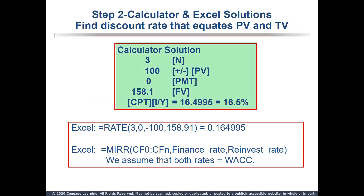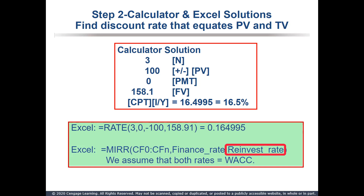Enter the values in the TVM keys: N equals 3, present value is negative 100, payment is 0, future value is your terminal value of 158.1. Compute I/Y: 16.5%. In Excel, you can use the RATE function. Excel also has a dedicated MIRR function, which asks for two rates. The finance rate is the discount rate applied to outflows; since we only had one outflow, this wasn't used. The reinvestment rate is the future value rate. For our problems, we'll use the weighted average cost of capital for both rates.